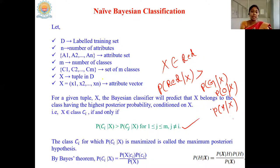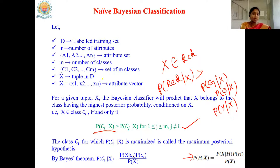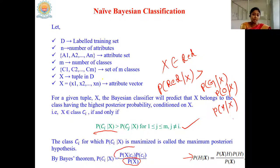Our task is to calculate the posterior probability of the class given the tuple. From Bayes' theorem, we have a formula for that. For simplification, P(X) is a constant value that does not change with respect to the class. Since we just want to compare the values of the posterior probabilities of all the classes, we can remove the denominator. So our task is now to focus on the numerator only.